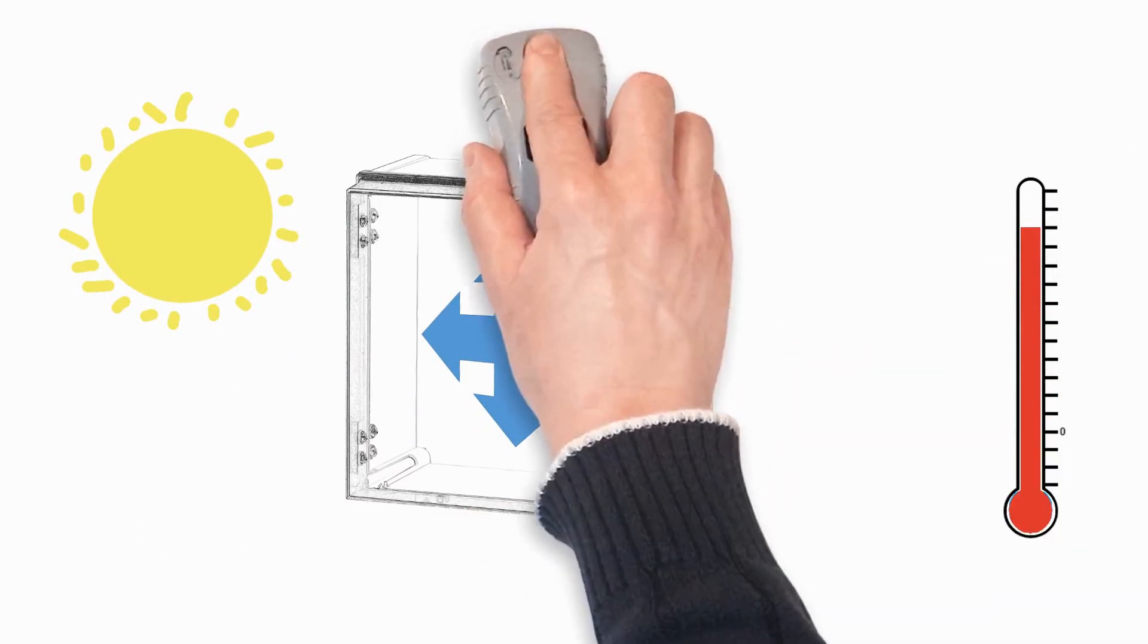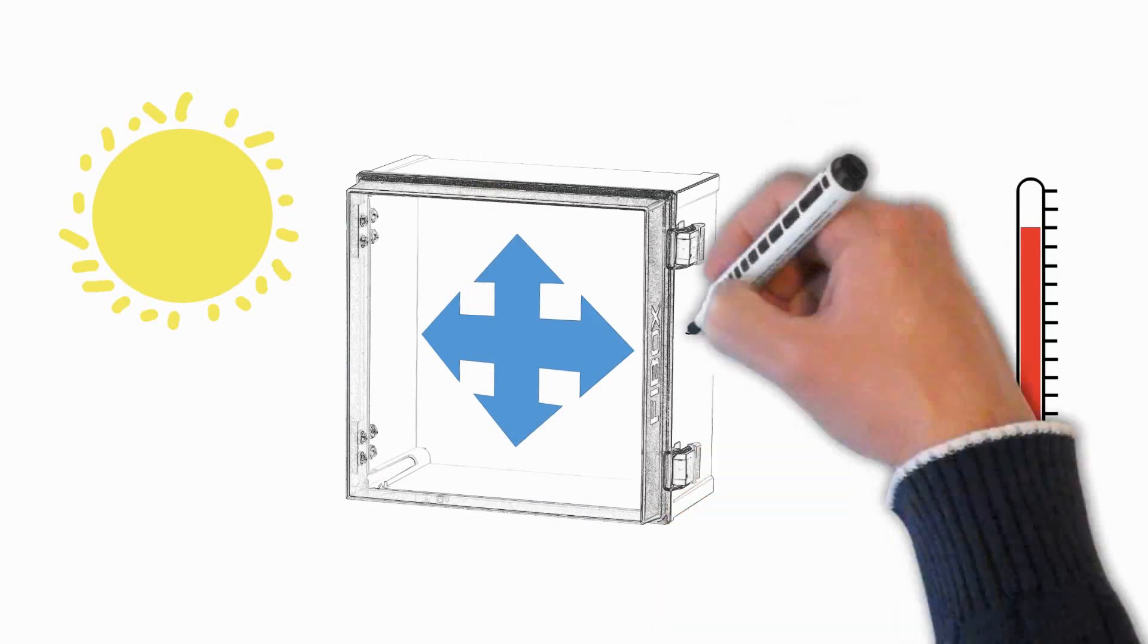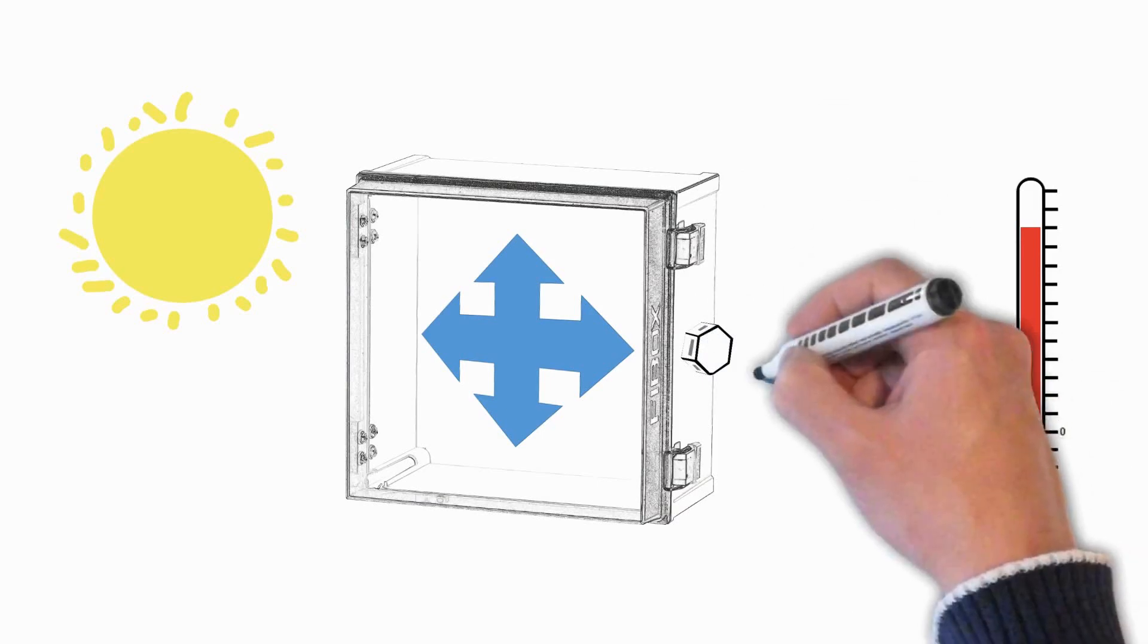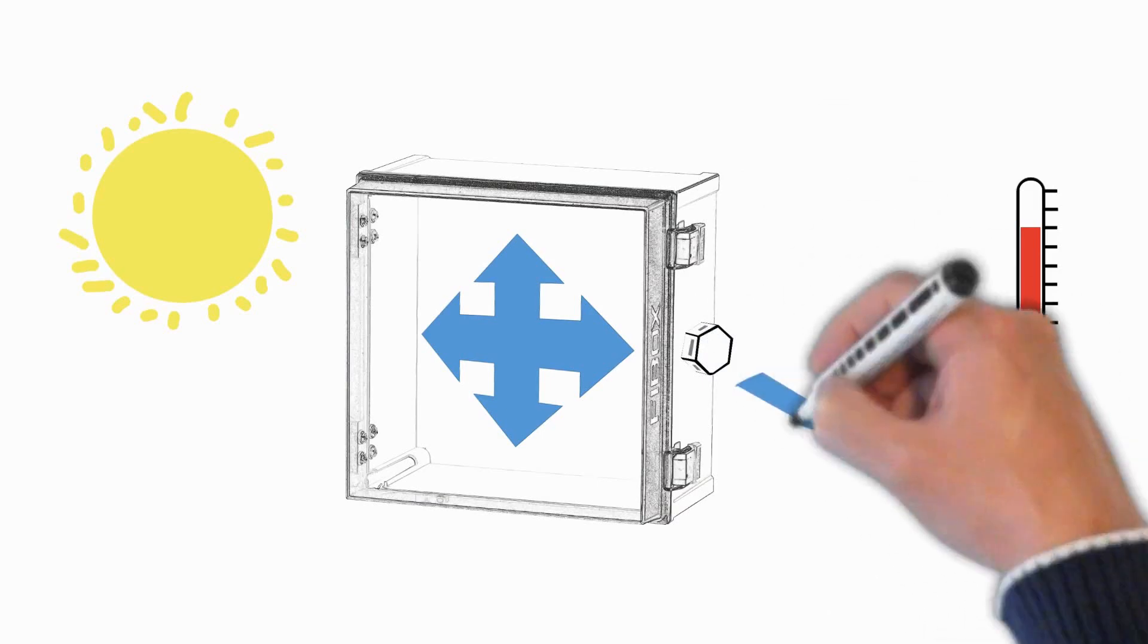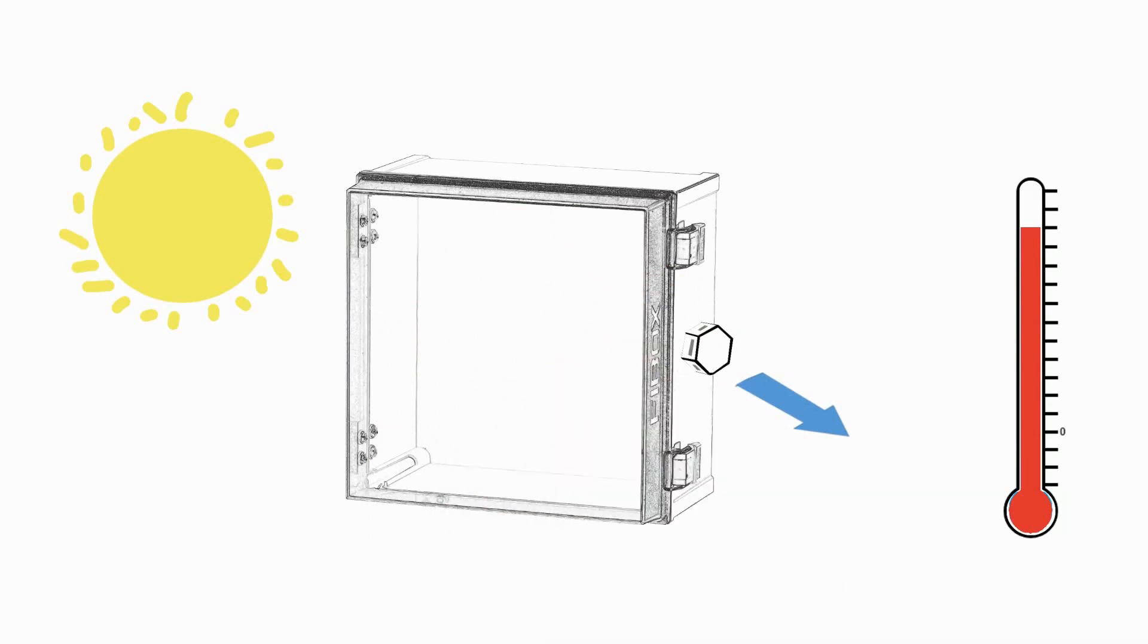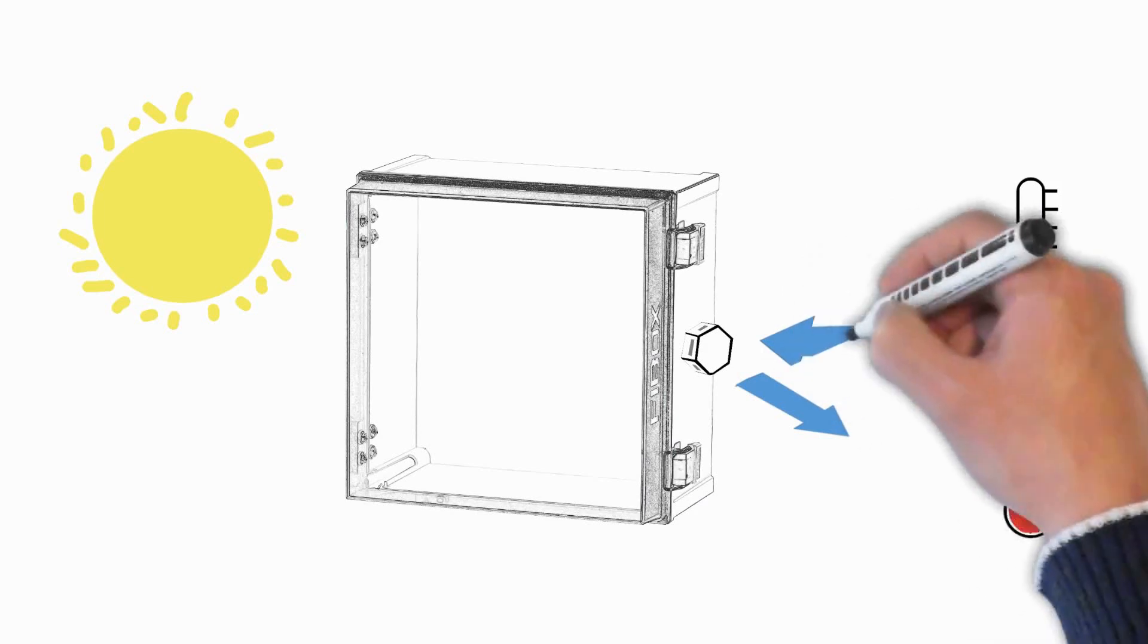FiBox pressure stabilization inserts rapidly equalize pressure while blocking water and contaminants in electronic enclosures and packaging. Equalizing the pressure reduces the risk of condensation forming inside the box, supports long service life, increases component reliability, all while helping to maintain the NEMA rating.